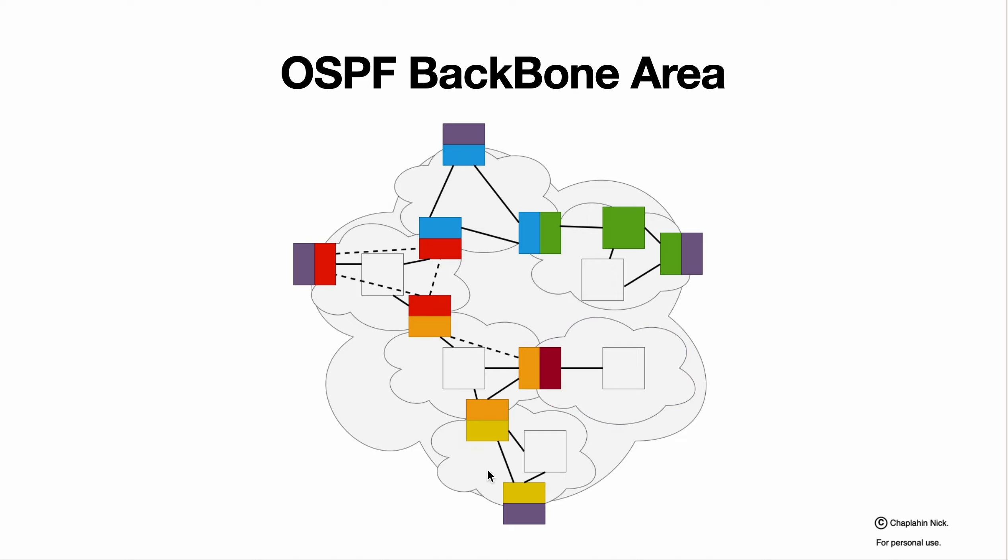As you remember about OSPF backbone area, backbone area contains area border routers and Autonomous System border routers and at some cases it could contain area internal routers. The main condition of the backbone area is each device should have a link to another device in the backbone area.